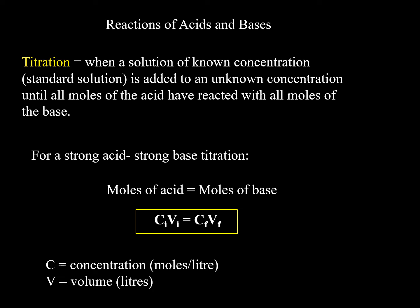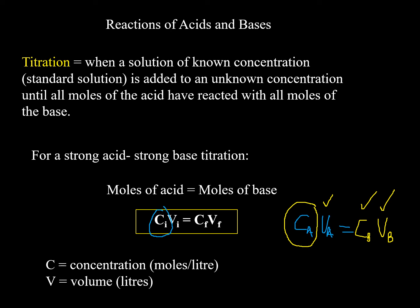For a titration, we use the principle: concentration of acid times volume of acid equals concentration of base times volume of base — written as CₐVₐ = CᵦVᵦ, or MₐVₐ = MᵦVᵦ. When we titrate, we know the concentration of NaOH in the burette, the volume of base added at the color change, and how much acid was added to the flask. Volume should be in liters.